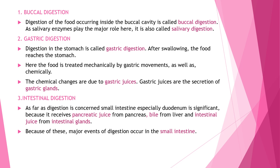Intestinal digestion: the small intestine, especially the duodenum, is significant because it receives pancreatic juice from the pancreas, bile from the liver, and intestinal juice from the intestinal glands. Because of this, the major events of digestion occur in the small intestine.